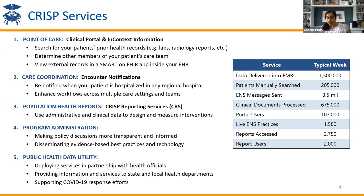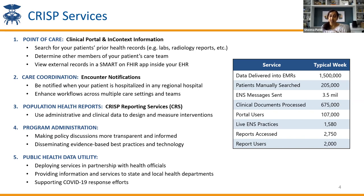The third bucket of services we support are population health related services through our CRISP reporting services suite. We use administrative claims data and increasingly bump that against clinical data to develop analytics and reports to understand your population at a higher level — not really an individual patient level, but more population health, understanding trends and utilization for your patients. We also support the state in program administration. As part of the total cost of care model, the state supports various programs — hospital-focused, specialty practice focused, primary care focused — and CRISP is often tasked with administering those programs from data analytics and reporting to CMS.